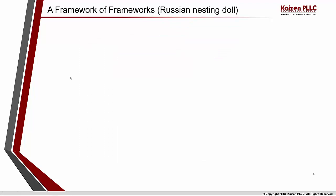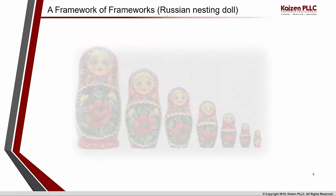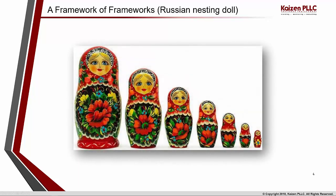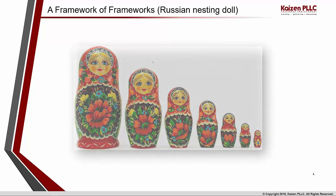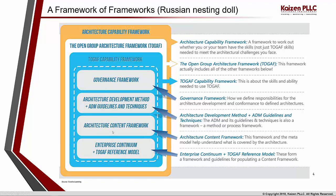The next sub-topic is how the TOGAF framework is made up of several other frameworks — I describe this as a Russian nesting doll. Just as a Russian nesting doll contains one doll inside another, TOGAF is similarly made up of several different frameworks. The outermost layer is the Architecture Capability Framework, which tells us whether you or your team have the skills — not just TOGAF skills, but enterprise-level architecture capability. Your enterprise could be made up of many other frameworks, such as ITIL or the Zachman Enterprise Framework.